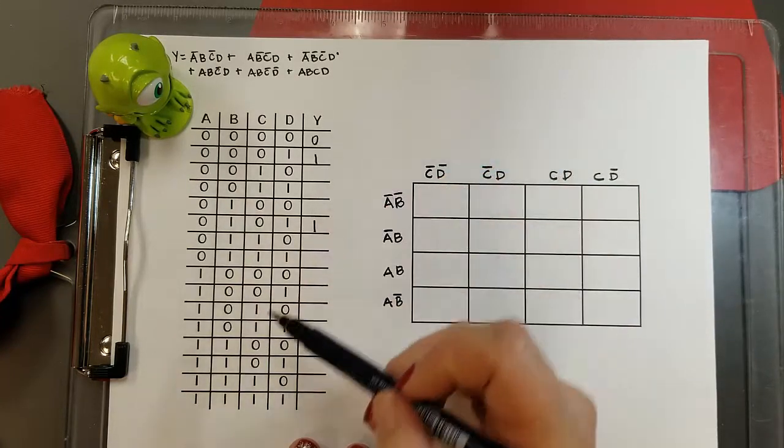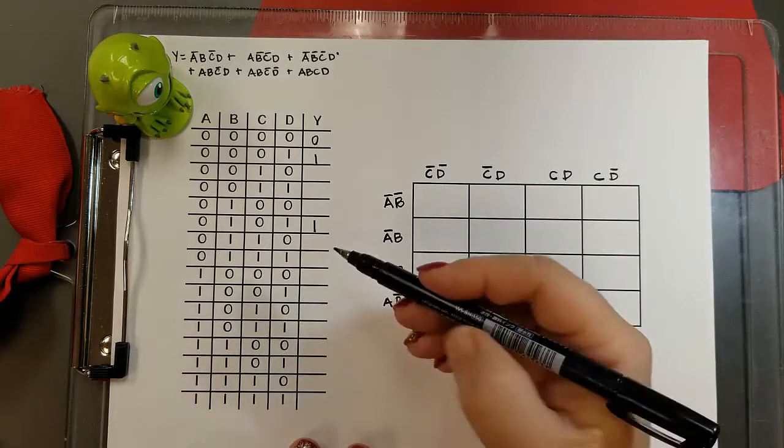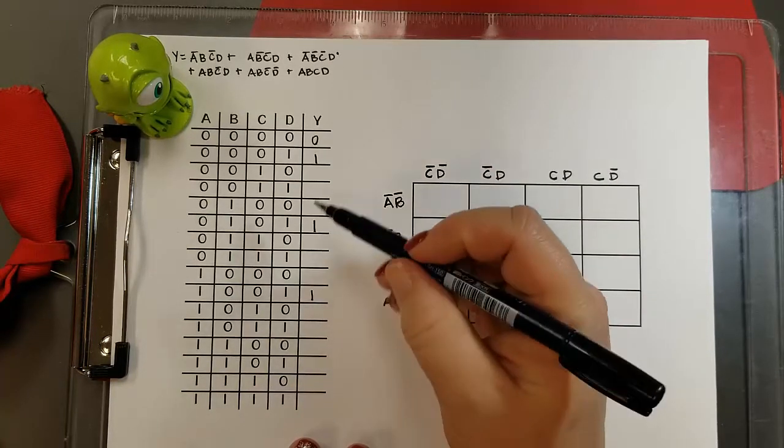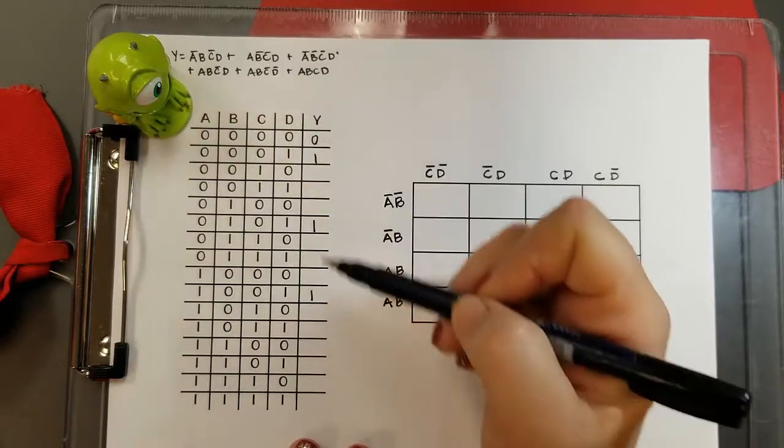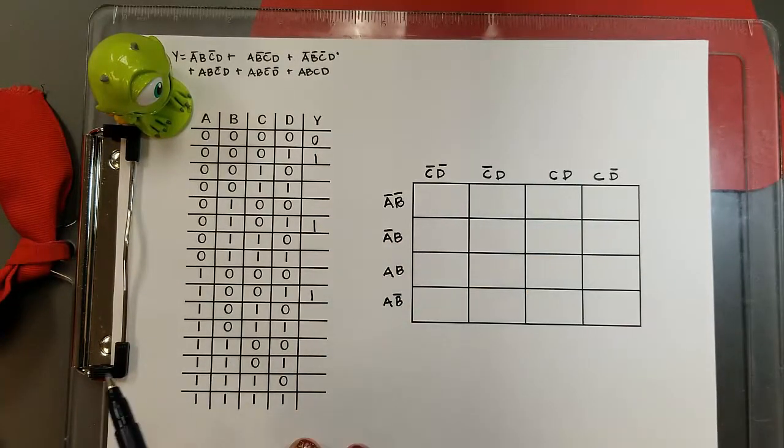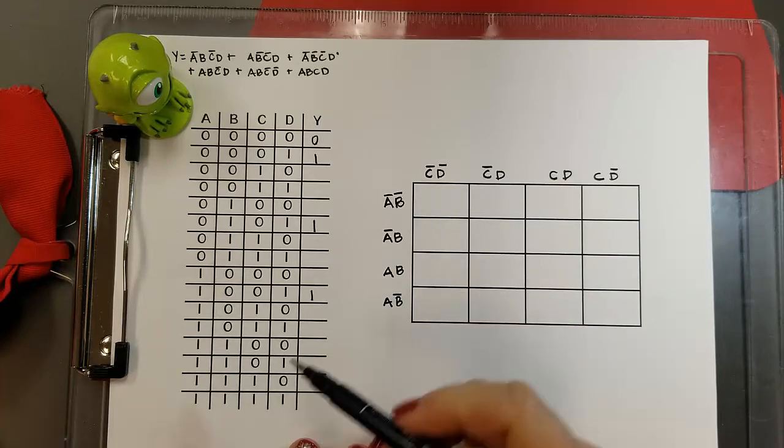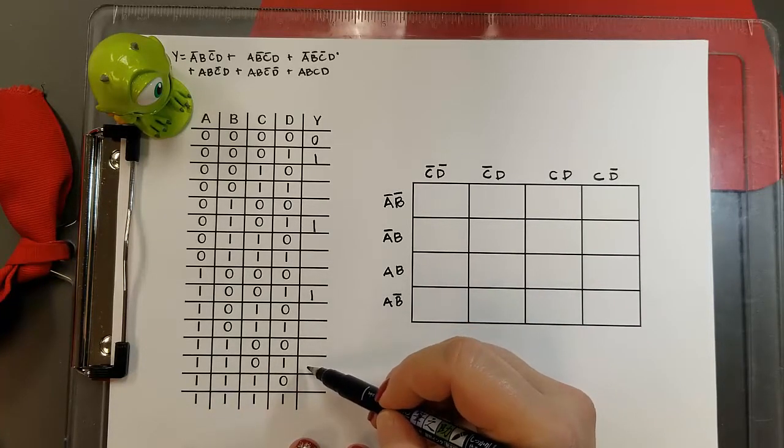And I'm going to go through and place a 1 in the output column for every expression, every term from my expression. Once I've entered all the 1s, I can go back in and enter 0s in all the rest of the places in the truth table.